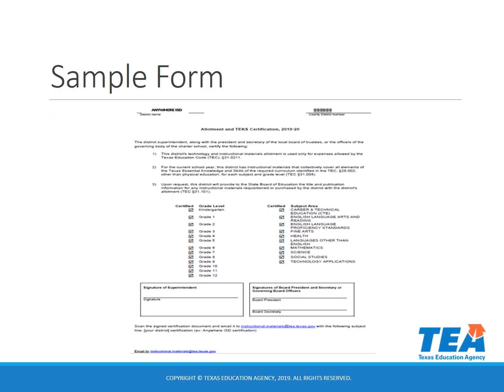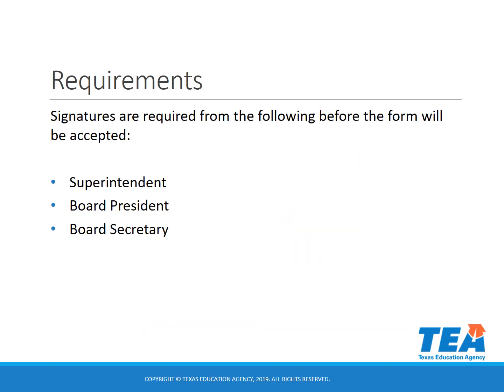This is a sample form of how the allotment antiques certification should look once you print it. Signatures from the superintendent, board president, and board secretary are required before the form can be accepted.